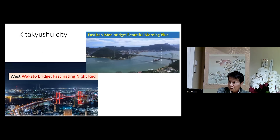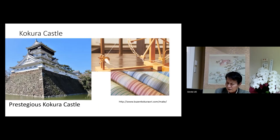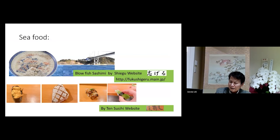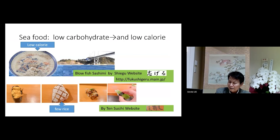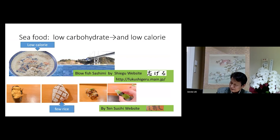This is my Kitakyushu series. To the east, Kamon Bridge, beautiful morning blue. To the west, Wakato Bridge, fascinating and nice. And this is Kokura Castle. Seafood is delicious, low calorie, and famous here — this is sushi, very famous in this district. If you come to Japan, please come to visit us.